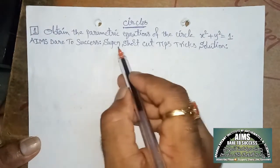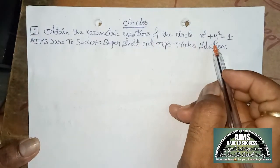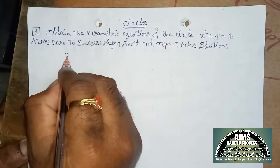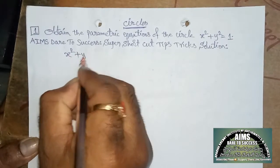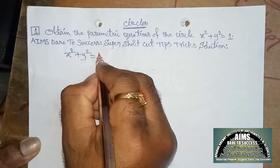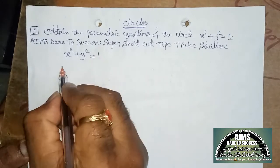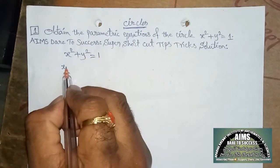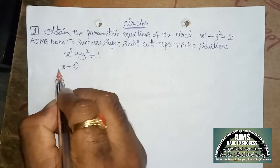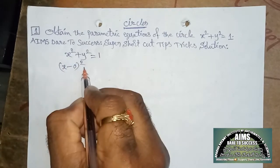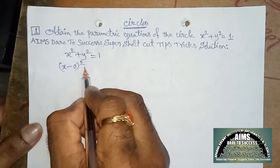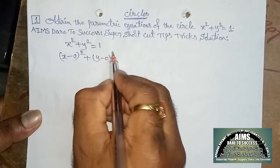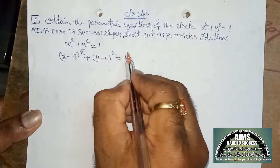Find the parametric equation of the circle x² + y² = 1. The given equation of the circle is x² + y² = 1. This equation can be written as (x − 0)² + (y − 0)² = 1².